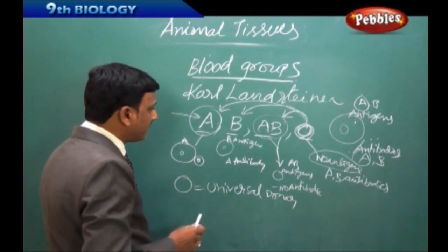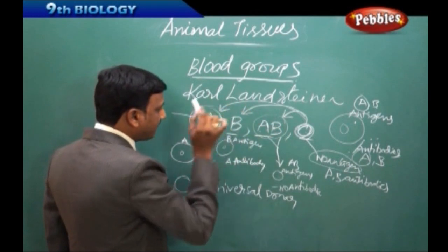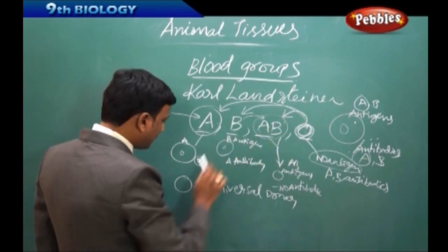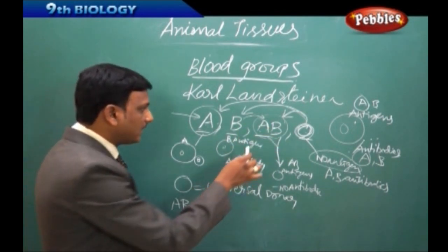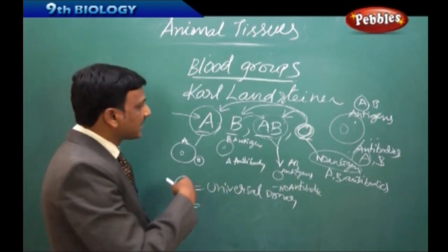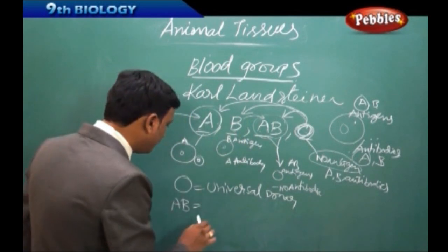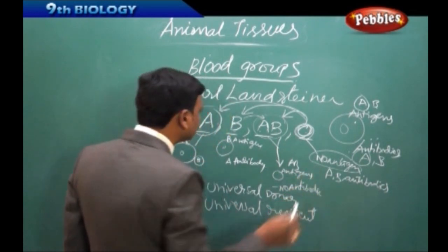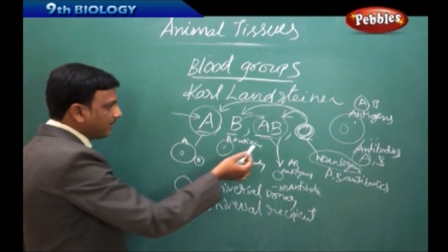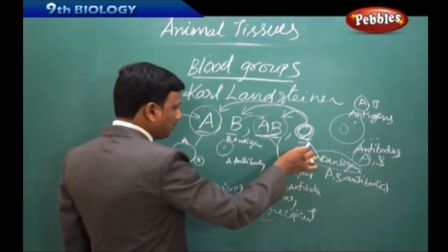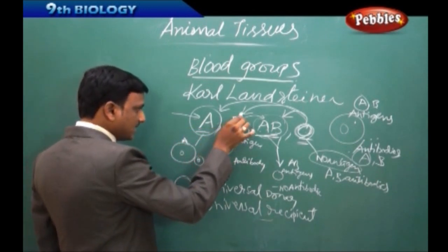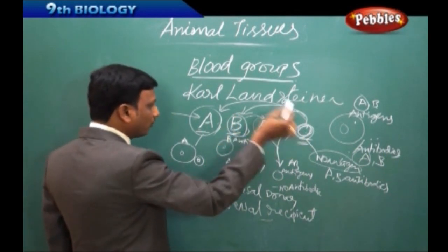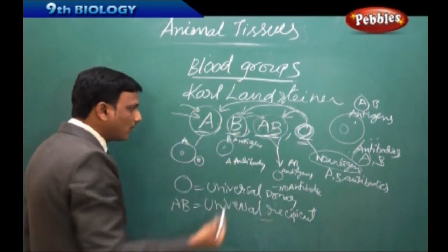Similarly, group A can give blood to AB, and group B can also give blood to AB. So AB is the universal recipient — a person with AB blood group can receive blood from any group: A, B, or O. AB is the universal recipient and O group is the universal donor. A group person should take blood from either A group or O group, and B group person should take blood from either B group or O group.